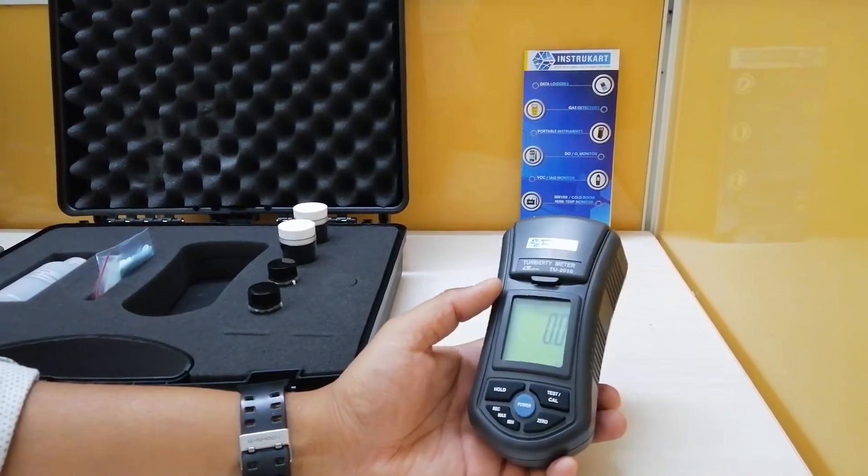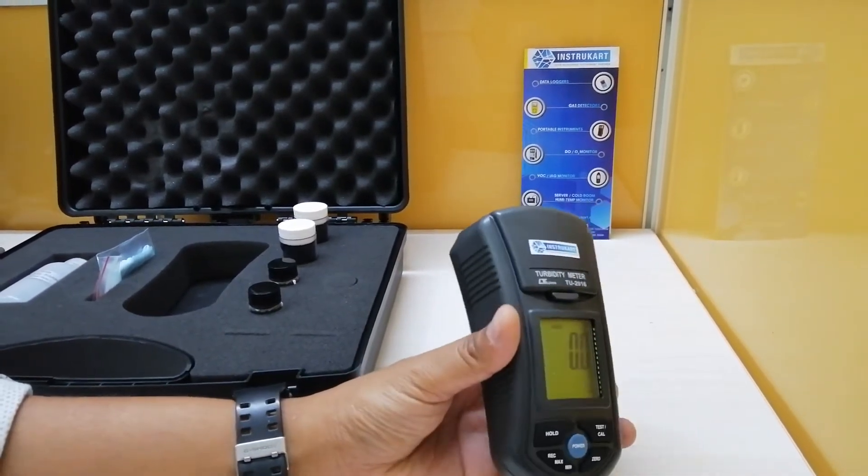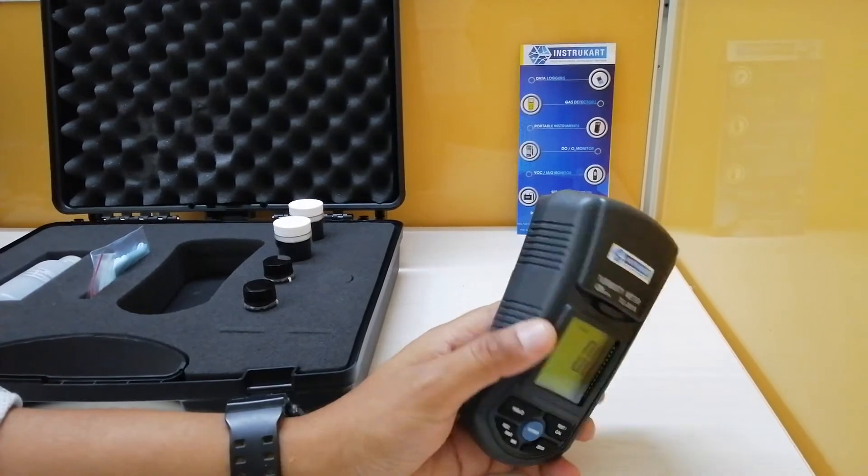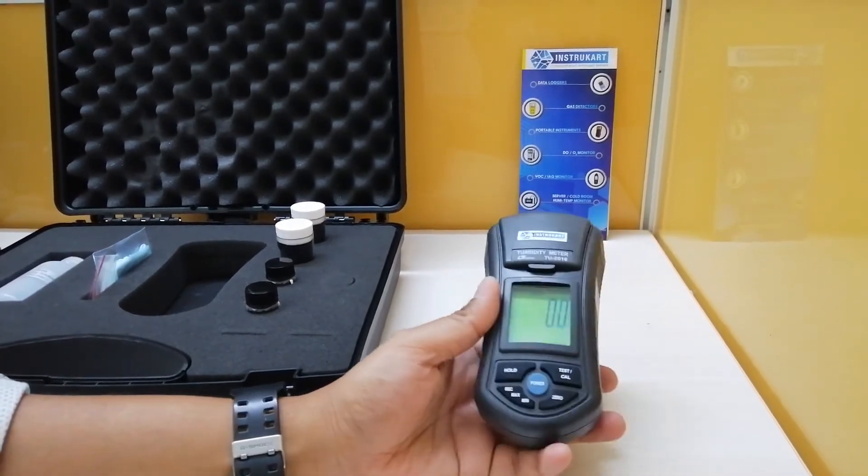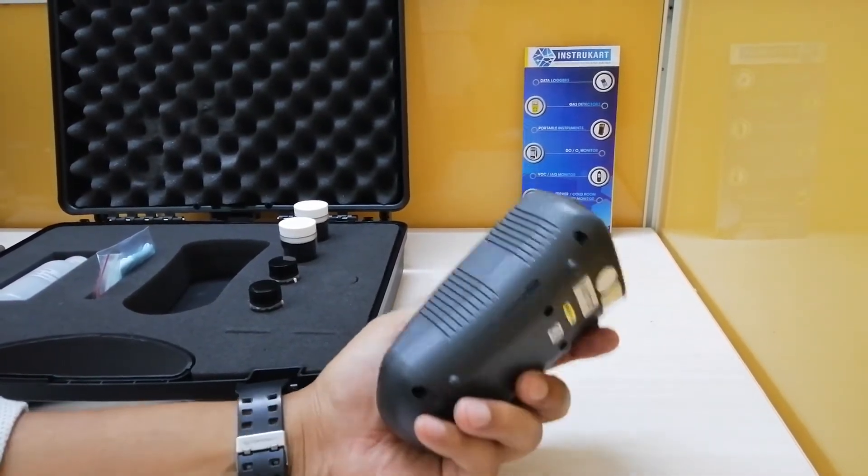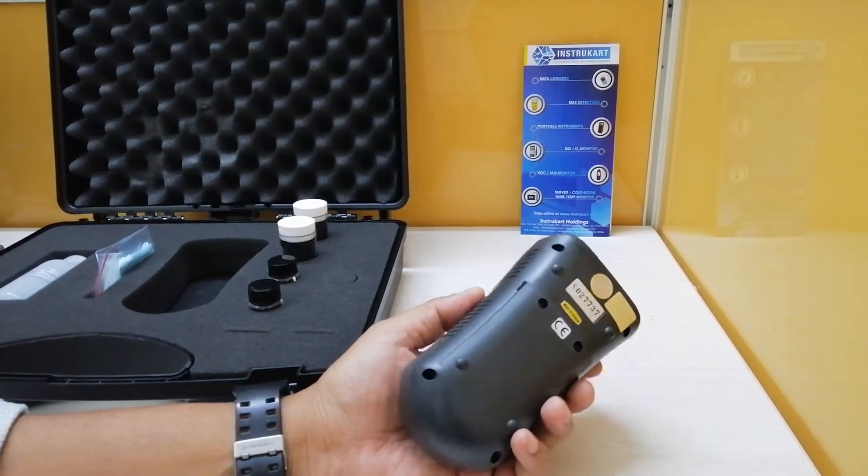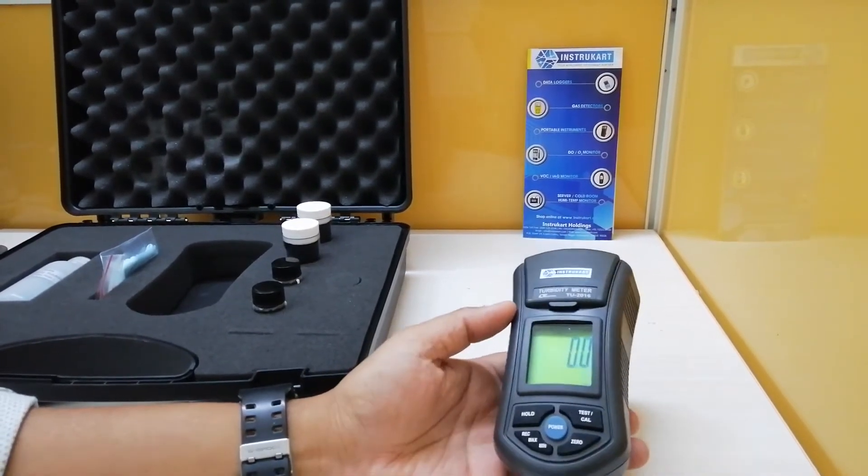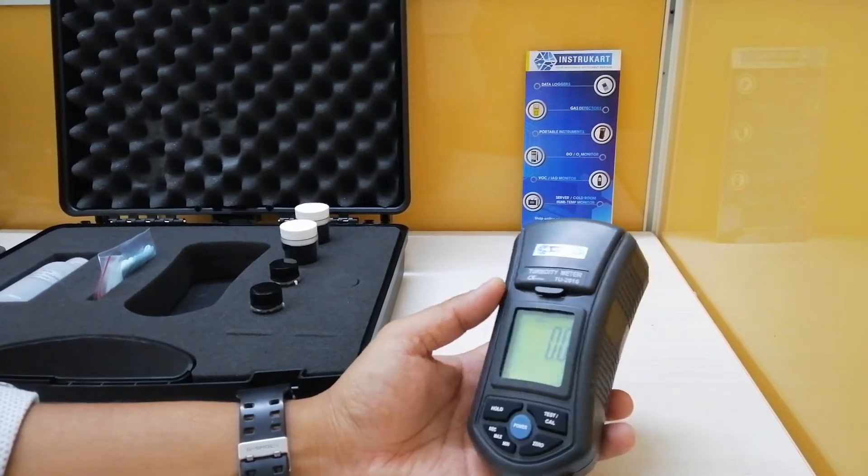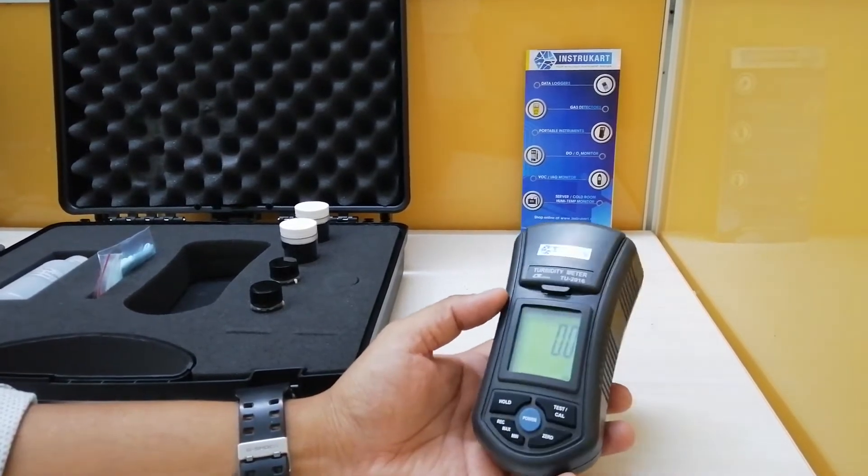The light source is an LED at 850 nanometers, and the detector is a photodiode. It meets the standard ISO 7027 for the testing procedure, and the response time for this meter is less than 10 seconds.